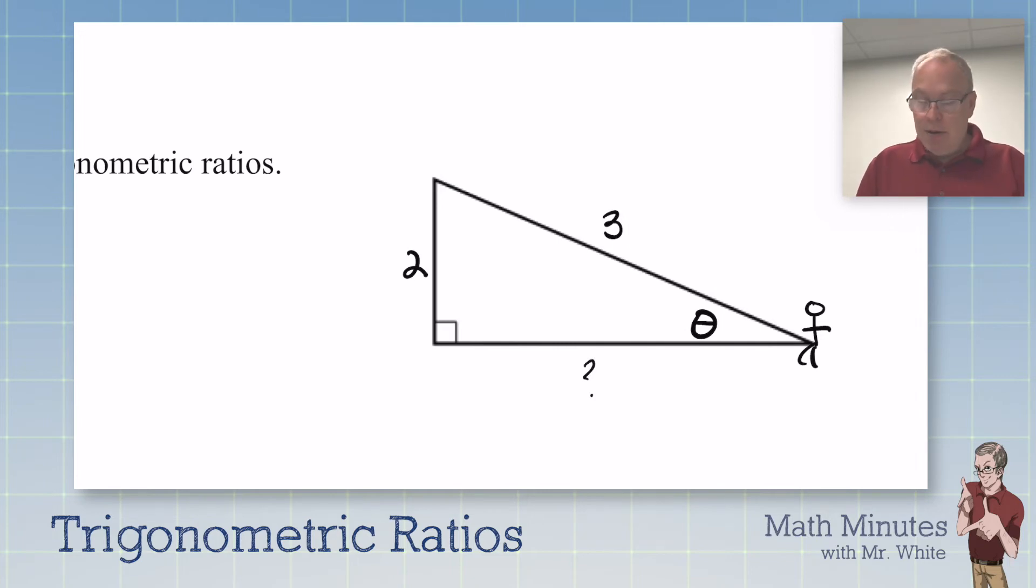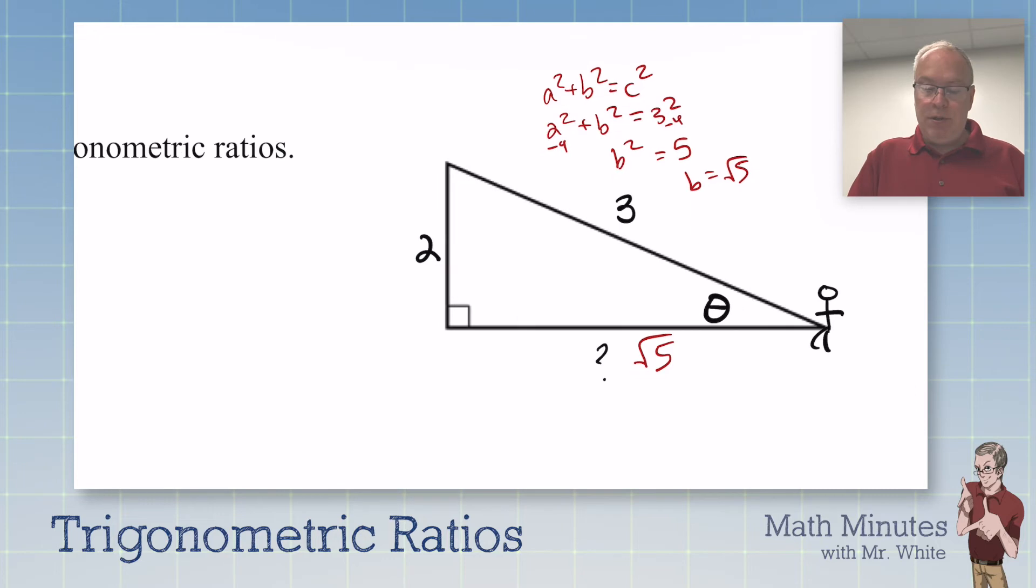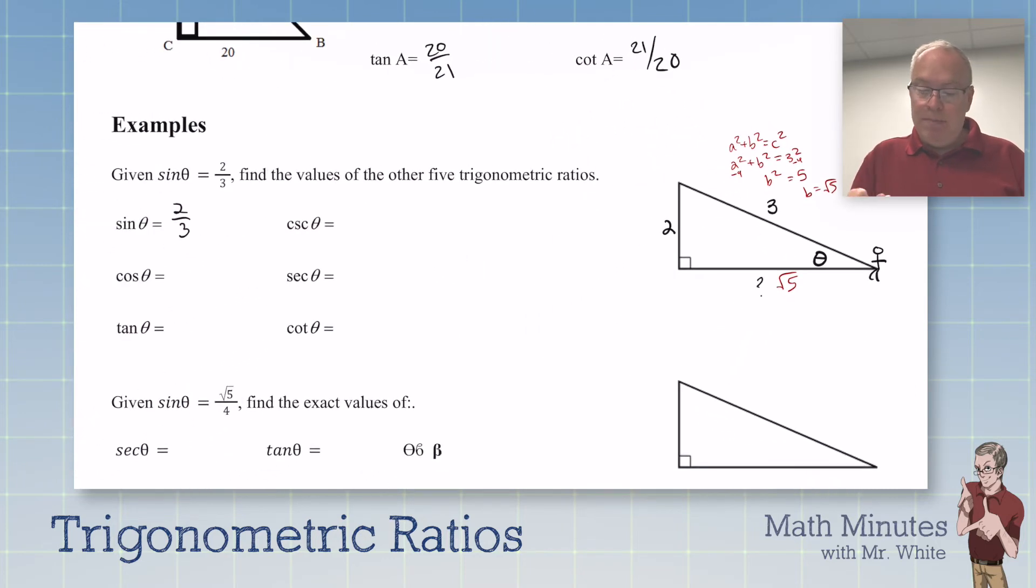So how do we get this third side? Pythagorean theorem. So a squared plus b squared equals c squared will work for any right triangle. Two squared plus b squared equals three squared. B squared, if we subtract four on both sides, we get five. So b equals the square root of five. So we put a square root of five down here. So we had to calculate it using Pythagorean's theorem. So sometimes you do have to sort of complete the triangle.